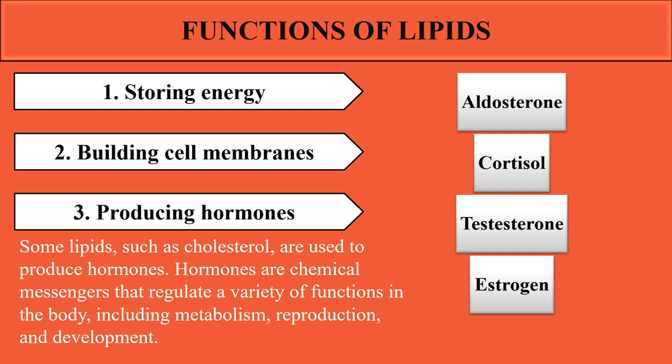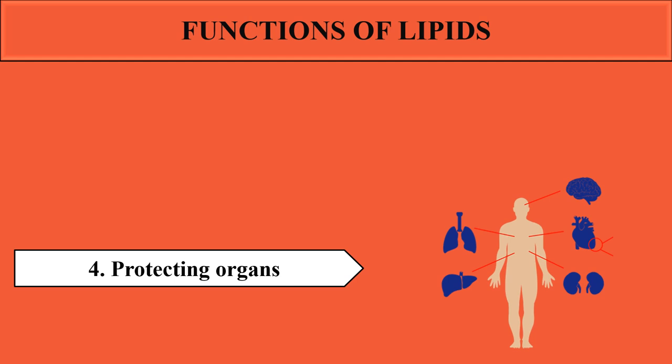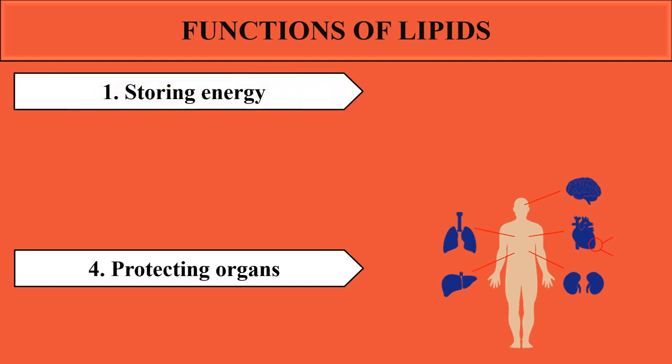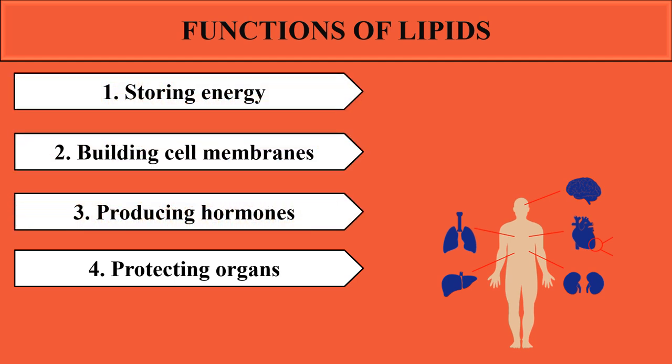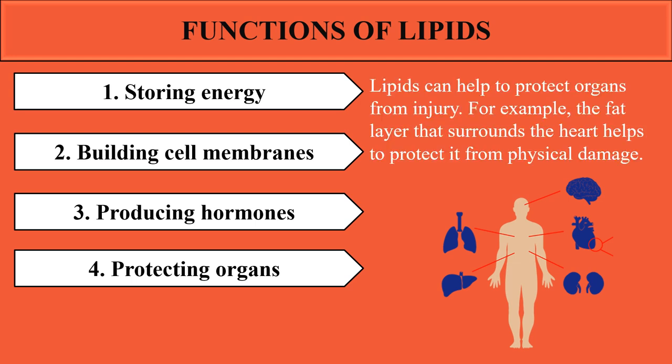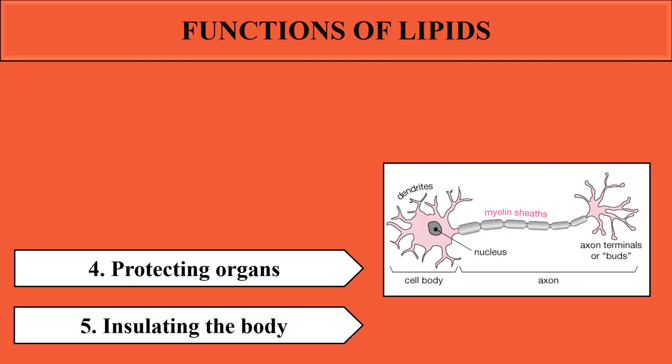Testosterone and estrogen are reproductive hormones derived from lipids. Lipids also have a protective function — they surround different organs in our body, protecting them from injury and physical damage.